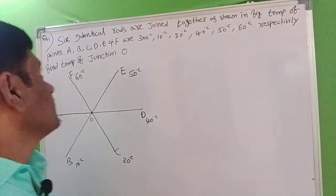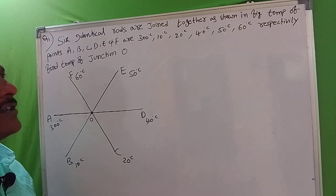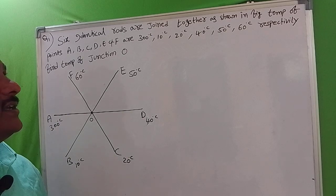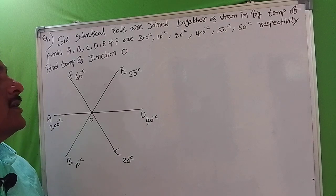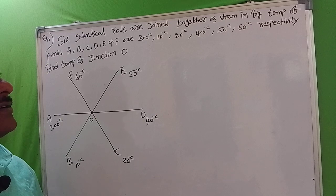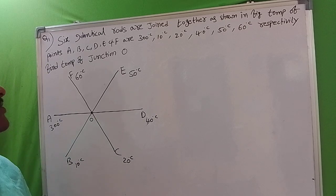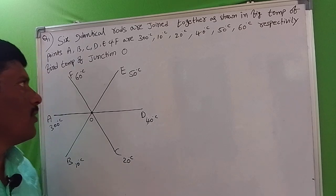Our first question is: 6 identical rods are joined together as shown in the figure. The temperatures at points A, B, C, D, E, and F are 300°C, 10°C, 20°C, 40°C, 50°C, and 60°C respectively. Find the temperature at junction O.